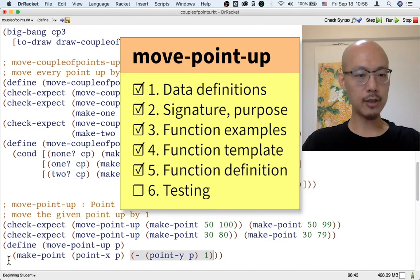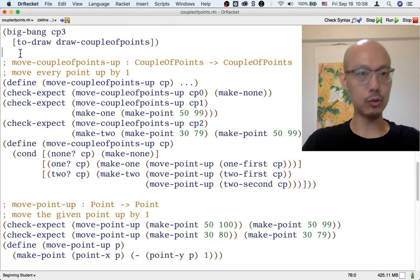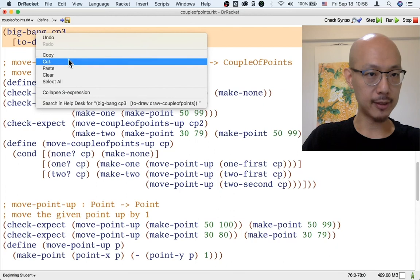So it looks like we're now done with both of these functions. MoveCouplePointsUp and move point up. Let's test things. But before I do, I'm going to get rid of this big bang because we don't want to be testing the big bang at the same time.